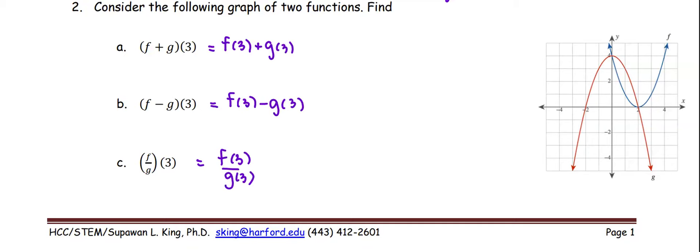The f is the blue curve, the g is the red curve. So at x equals 3, the f at 3 equals 1, and at x equals 3, the g at 3 is negative 5.